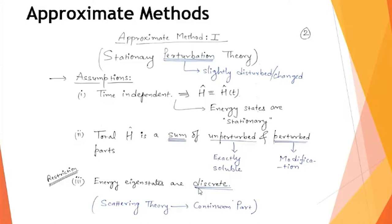How is this technique useful to experimental physicists? In experiments, whatever observation you make requires some external agency. For example, to study the spectra of the hydrogen atom, you can apply an electric field — this is the famous Stark effect. You can also apply a magnetic field, giving the famous Zeeman effect. In all these experiments, we actually disturb or perturb the system using external agencies like electric field, magnetic field, temperature, or pressure to investigate it.